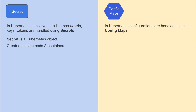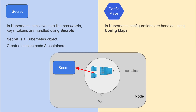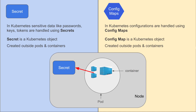Secret is a Kubernetes object and is created outside pods and containers. If you look at this image, inside a node there can be one or multiple pods, and inside a pod there can be one or multiple containers. Secret is managed and created outside the pods and containers. Similarly, config map is a Kubernetes object that is also created and managed outside the pods and containers.